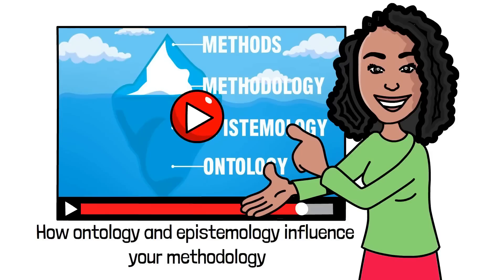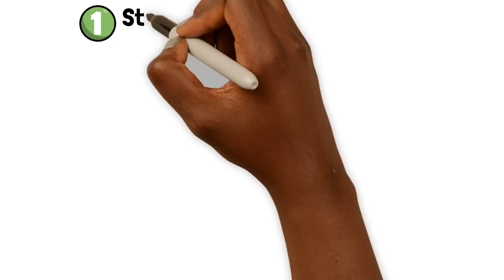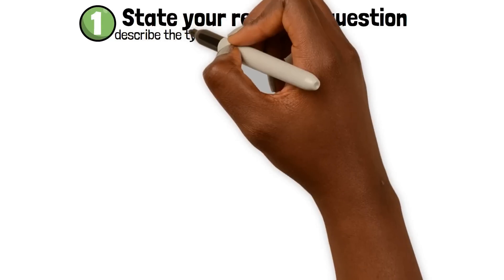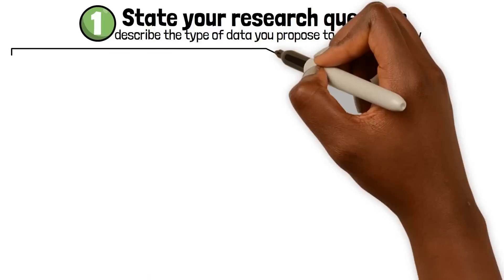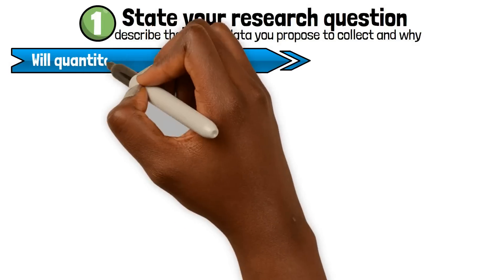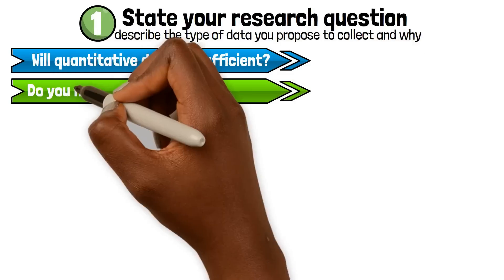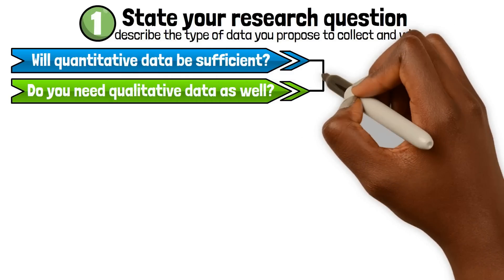Okay, with that clarified, let's dive into the steps. Step 1: State your research question and describe the type of data you propose to collect and why. For example, will quantitative data be sufficient or do you need qualitative data as well?